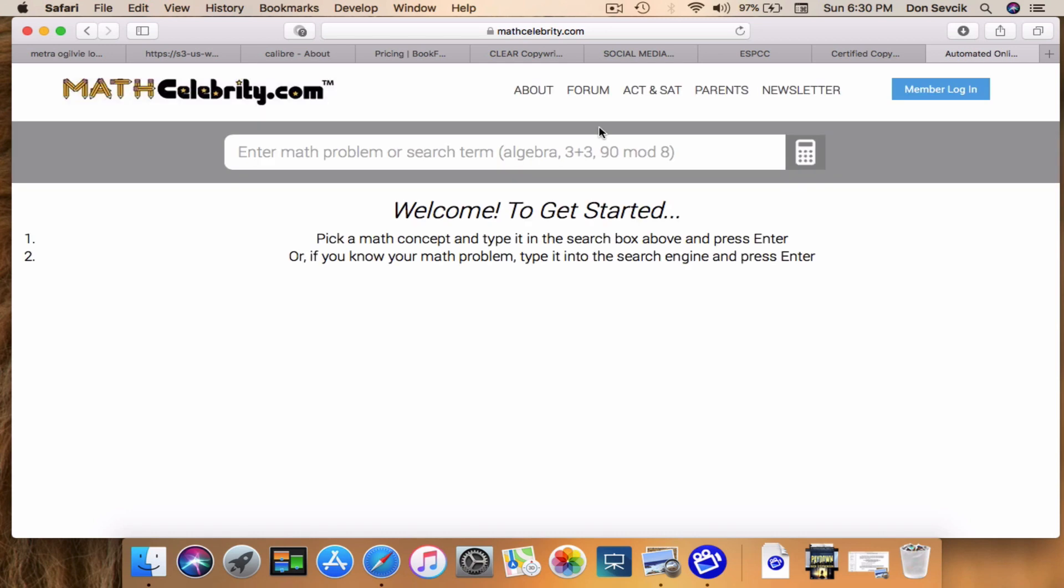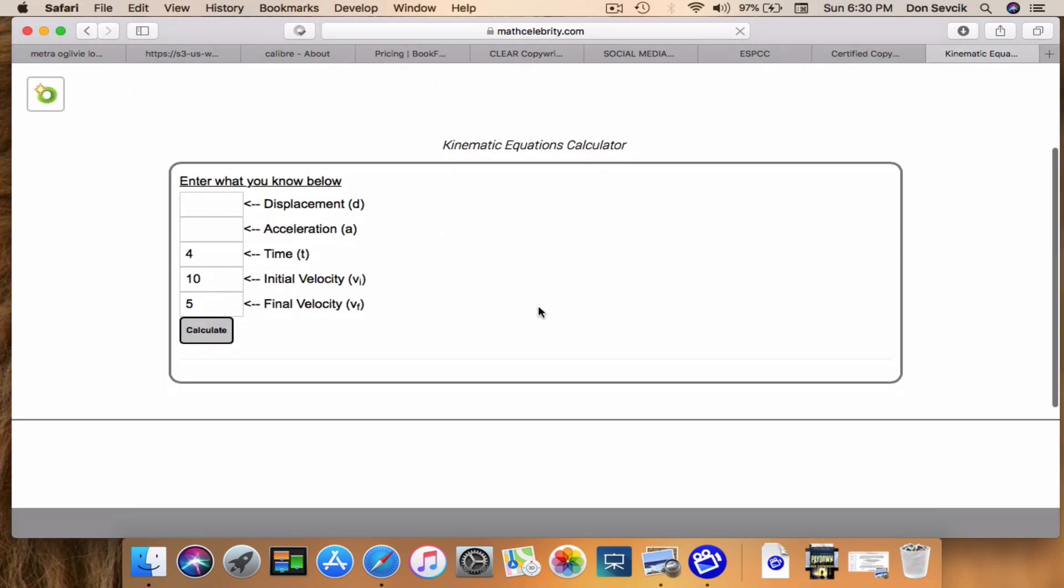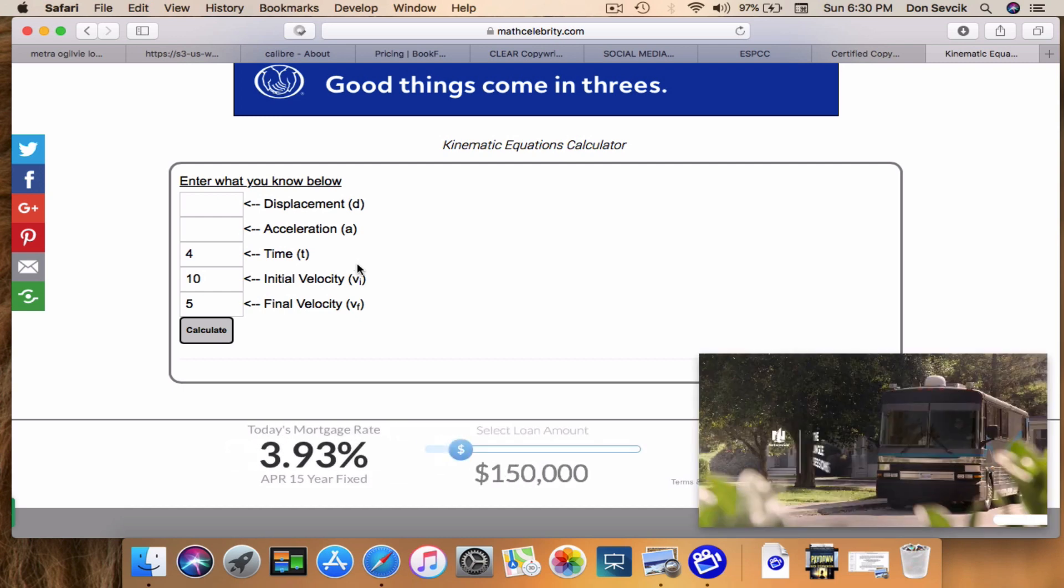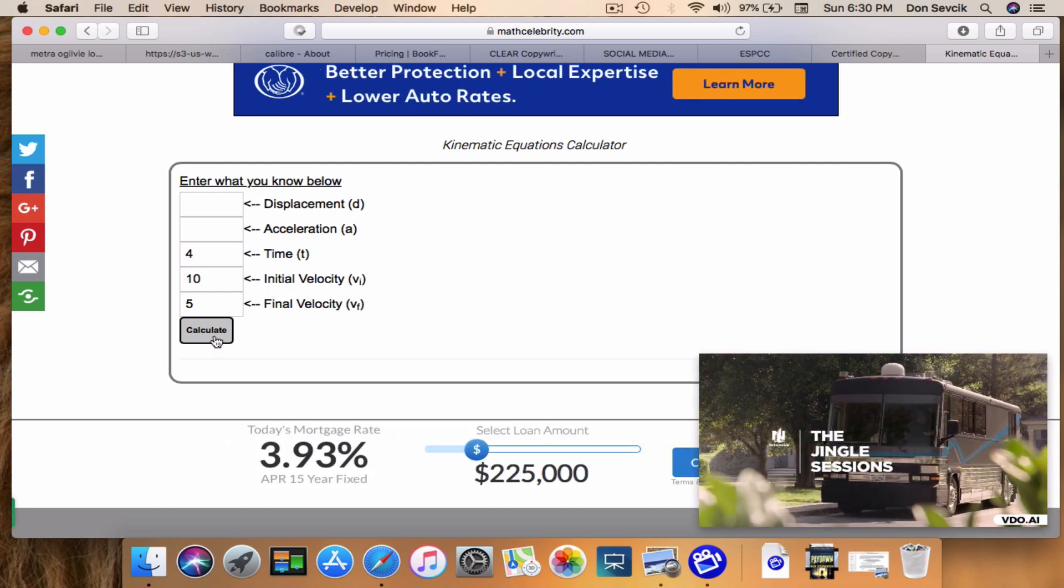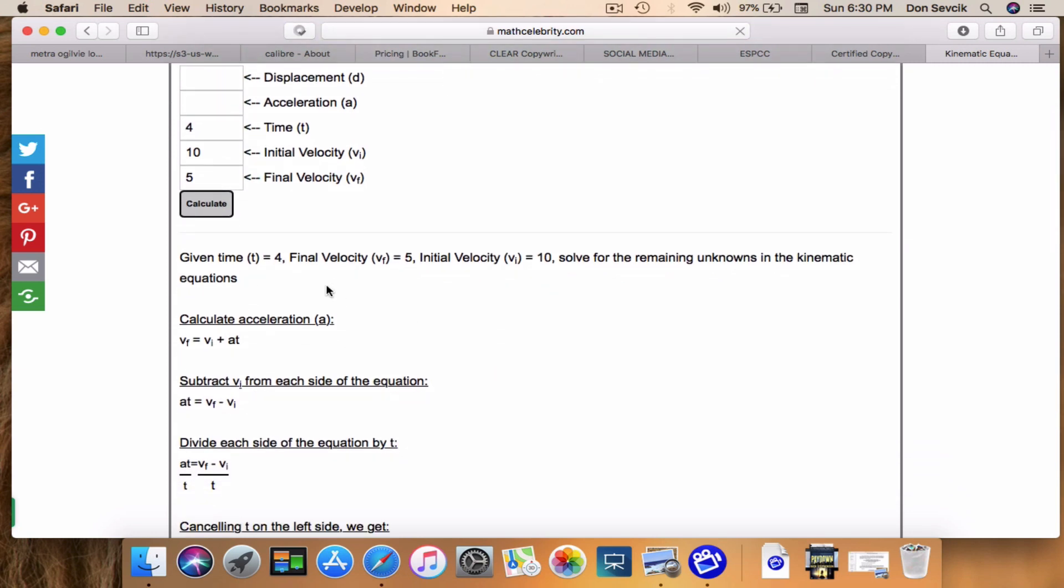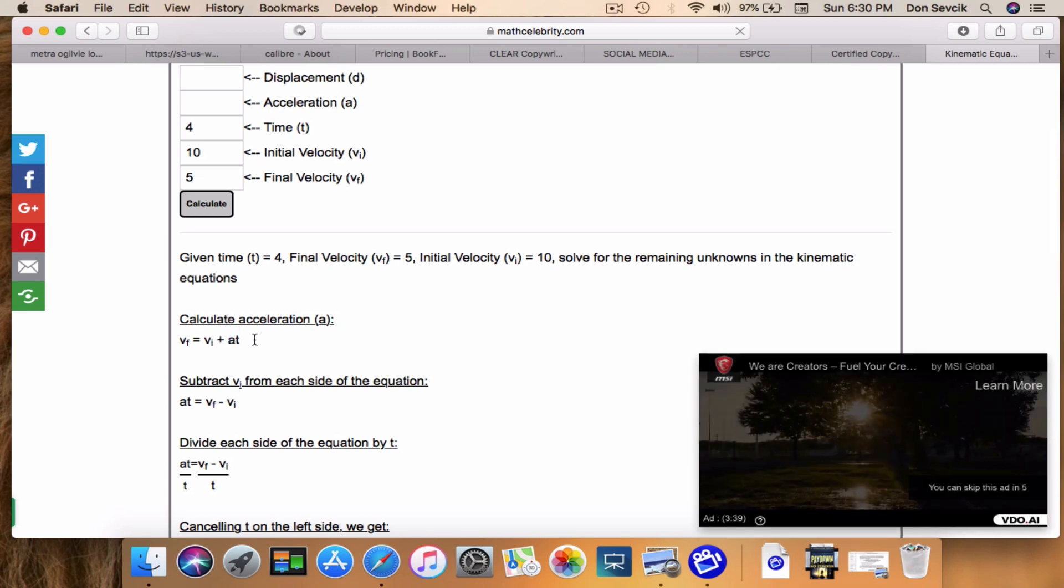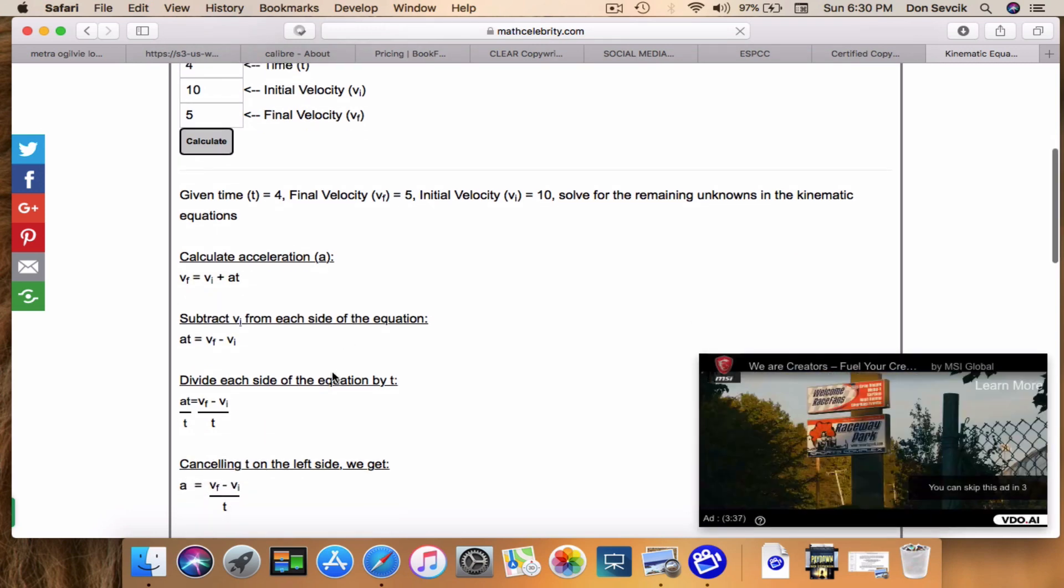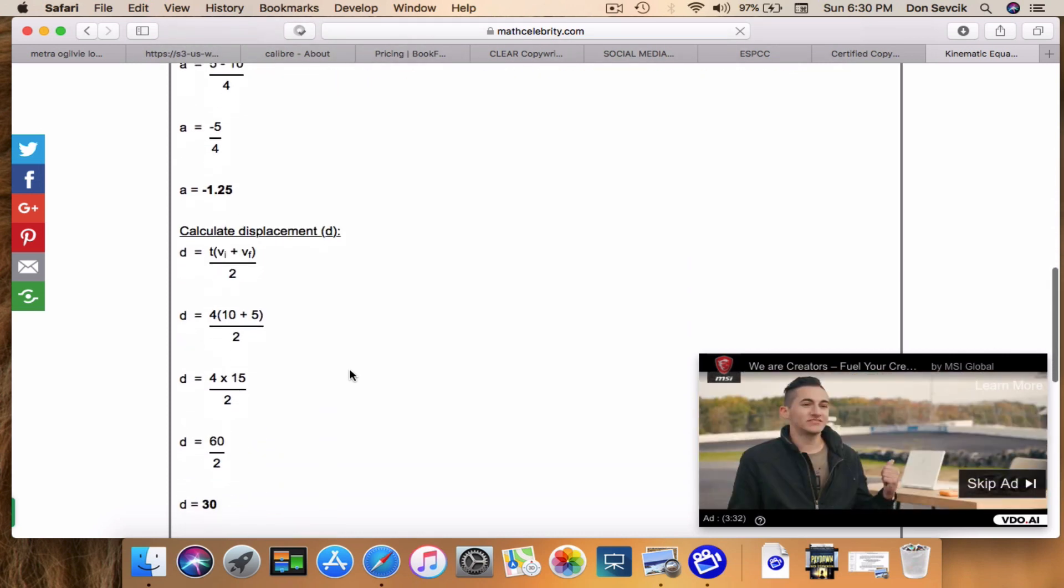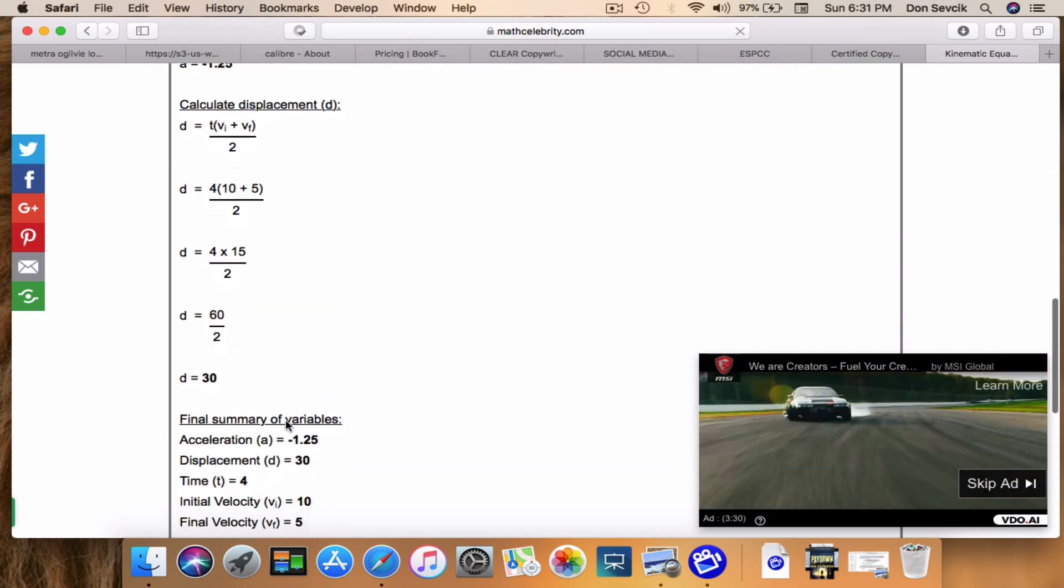So here's the Math Celebrity website. Let's just type kinematic. And here is our calculator, and you can see here's the five potential variables in any of the kinematic equations. So we'll go ahead and run this one, which is similar to the one I gave you. What the calculator does is it finds the equation that it thinks it should solve for. It's going to rearrange if necessary, and then it's going to plug in your numbers.